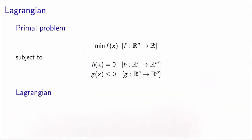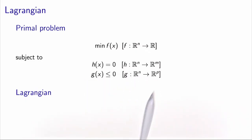Let's consider a generic optimization problem. We want to minimize an objective function f which has n variables. We have m equality constraints and p inequality constraints. What we will do is relax these constraints by associating a penalty parameter with each of them.